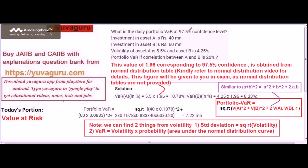97.5% confidence means up to this percent confidence the risk won't be beyond the controllable limits. For 97.5% confidence there is a percentile probability given in the normal distribution table. This value will always be given to you in the exam, or else there would be a separate normal distribution table provided on the PC itself in the CAIIB exam. So this value will be given in the question for 97.5% confidence.